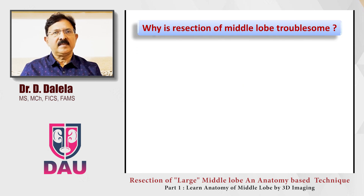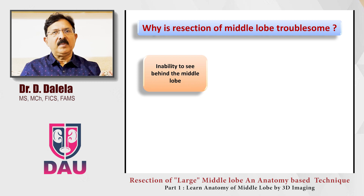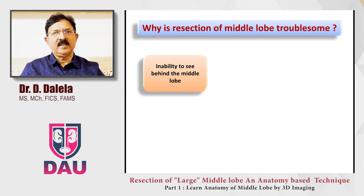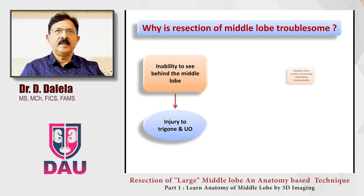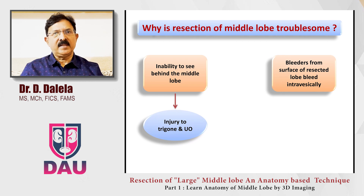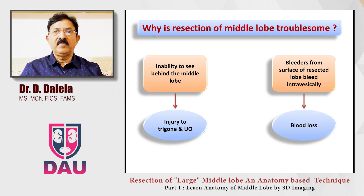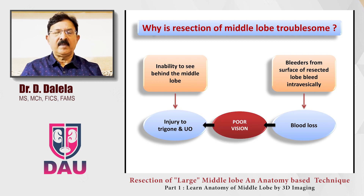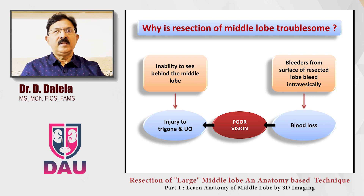The resection of the middle lobe of the prostate is often troublesome, particularly for beginners. The main reason is that you are not able to see behind the middle lobe into the bladder lumen, and with your loop you can inadvertently create injury to the trigone or bladder. Secondly, when you resect the prostate from the cut surface of the middle lobe, the bleeders bleed into the bladder lumen. This will not be visible to you sometimes, leading to greater blood loss, and when you have bleeders pumping blood into the bladder lumen, vision becomes very poor — increasing the risk of posterior bladder wall injury. Because of these reasons, the resection of the middle lobe is tricky.